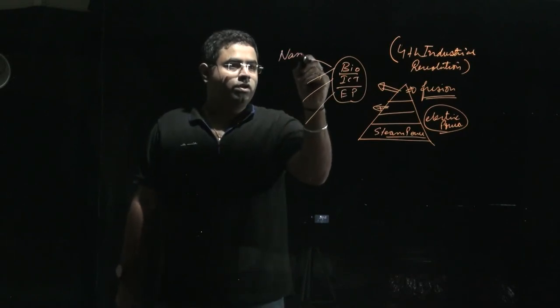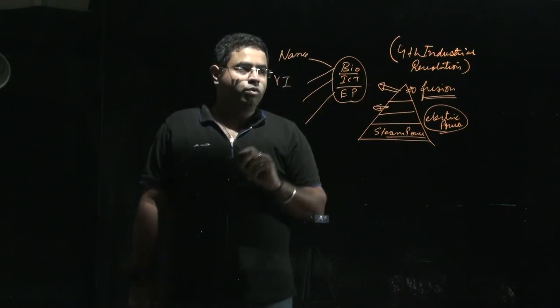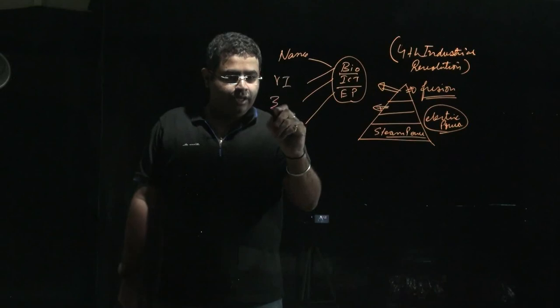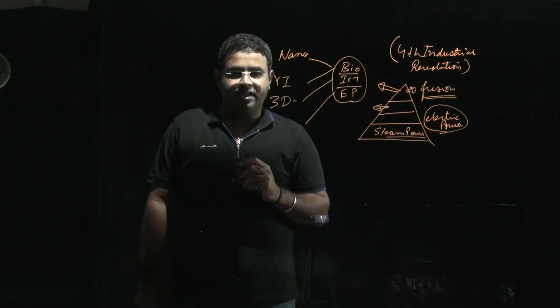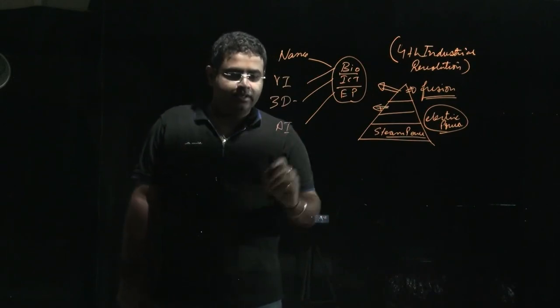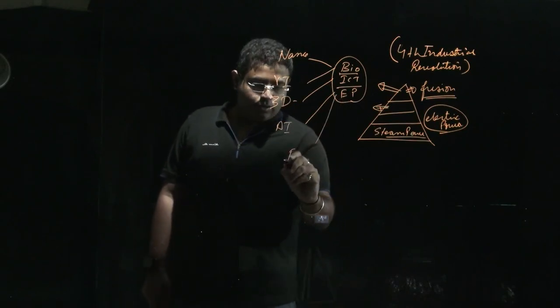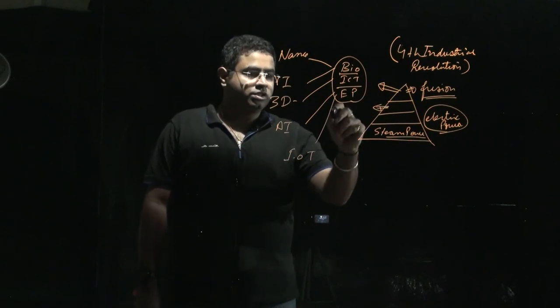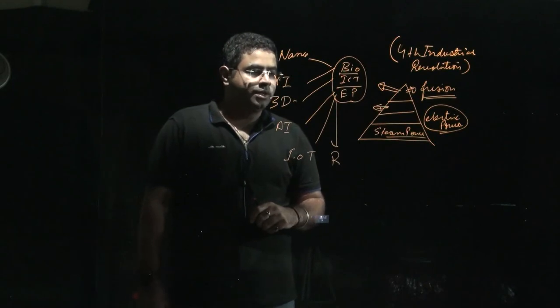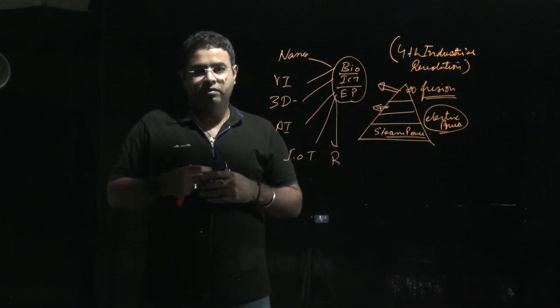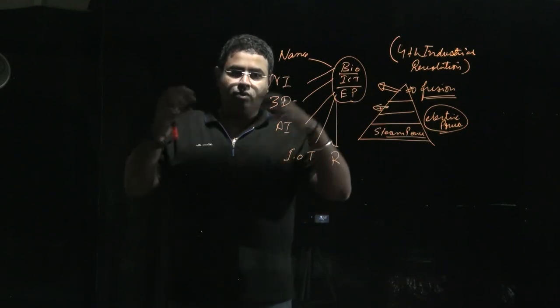What new types of technologies? Nanotechnology is the resultant of the fourth industrial revolution. Virtual intelligence, 3D printing, artificial intelligence, Internet of Things, and robotics are all resultants of the fourth industrial revolution.